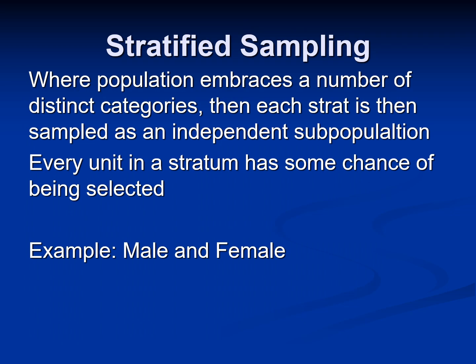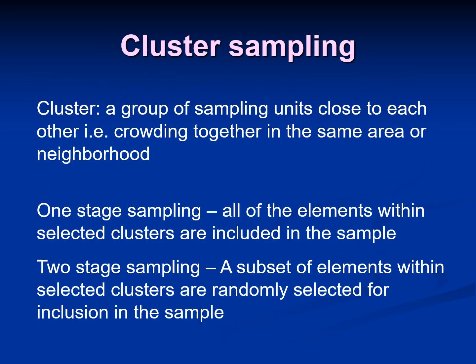Stratified sampling is where a population embraces a number of distinct categories, and each stratum is then sampled as an independent subpopulation. Every unit in a stratum has some chance of being selected. Examples of strata include male-female, or doctor versus non-doctor.